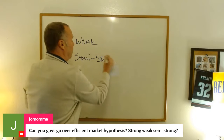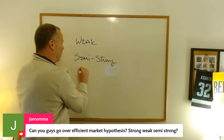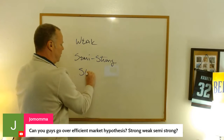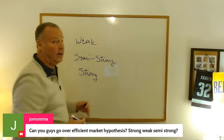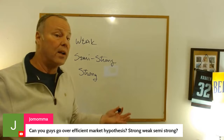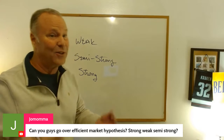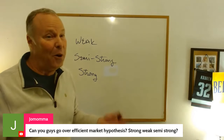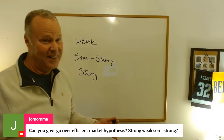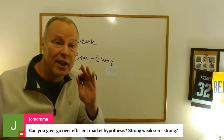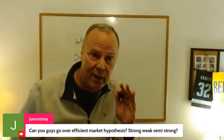By the way, there are three forms of the hypothesis, and there are always four answer choices — so you can always eliminate one of them. There's no such thing as semi-weak. That's like being semi-pregnant.